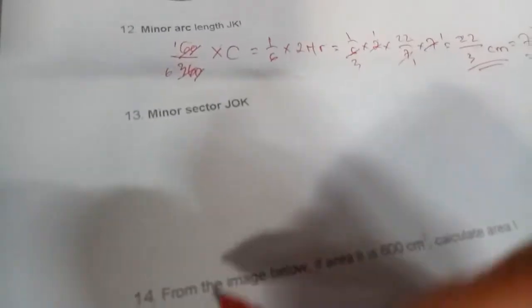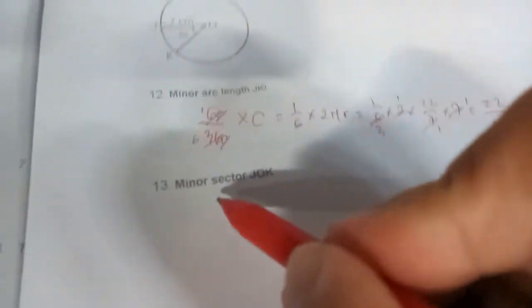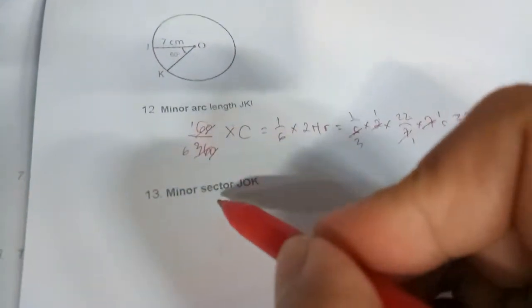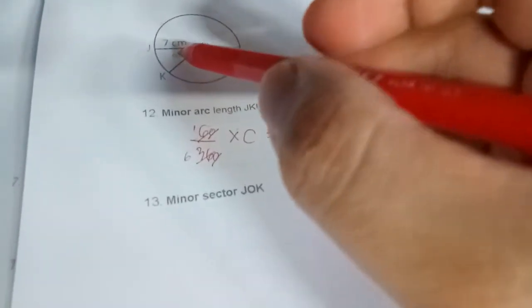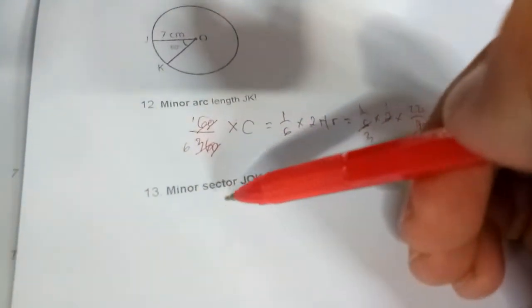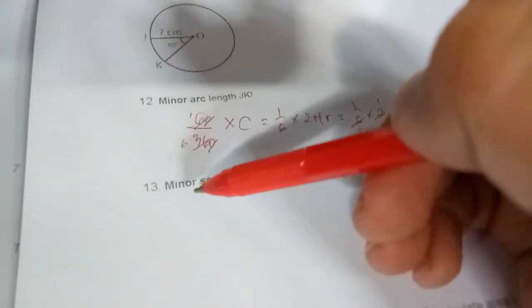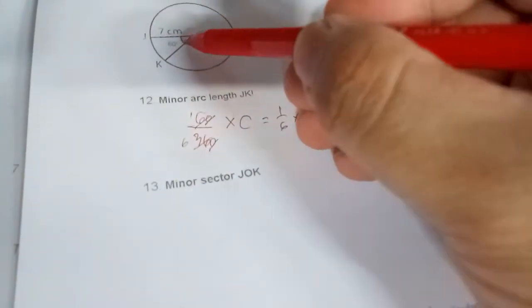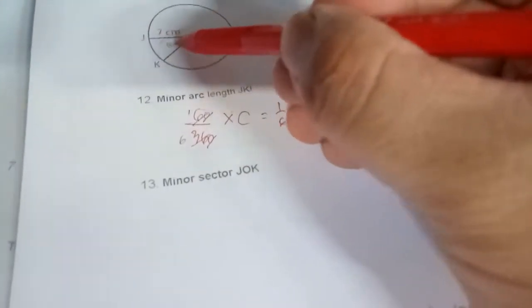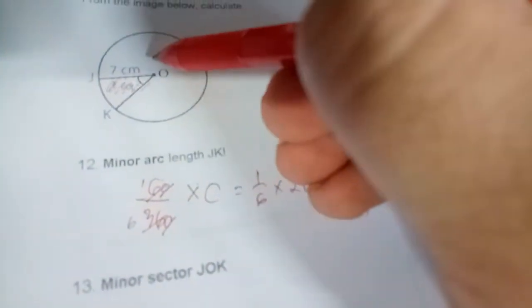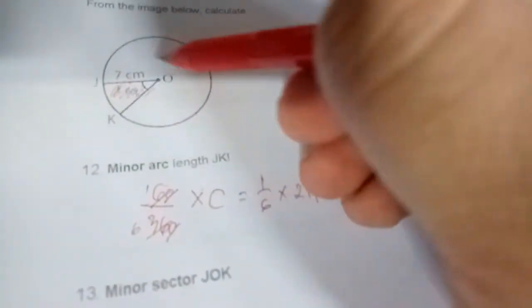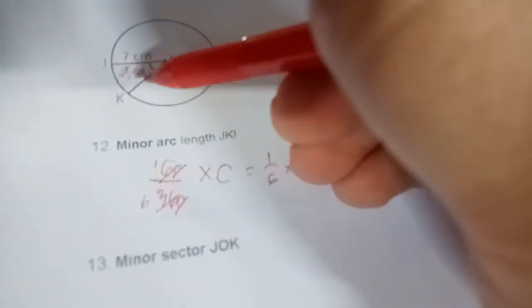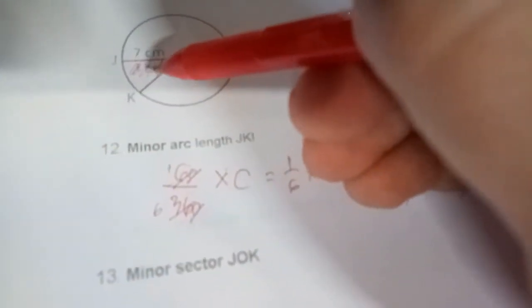For the second one, calculate the minor sector JOK. We have minor and major - the minor one is this one here, and the major one is the big one. It's like a slice of pizza. When you want to find this, it's actually a part of the area of the circle.